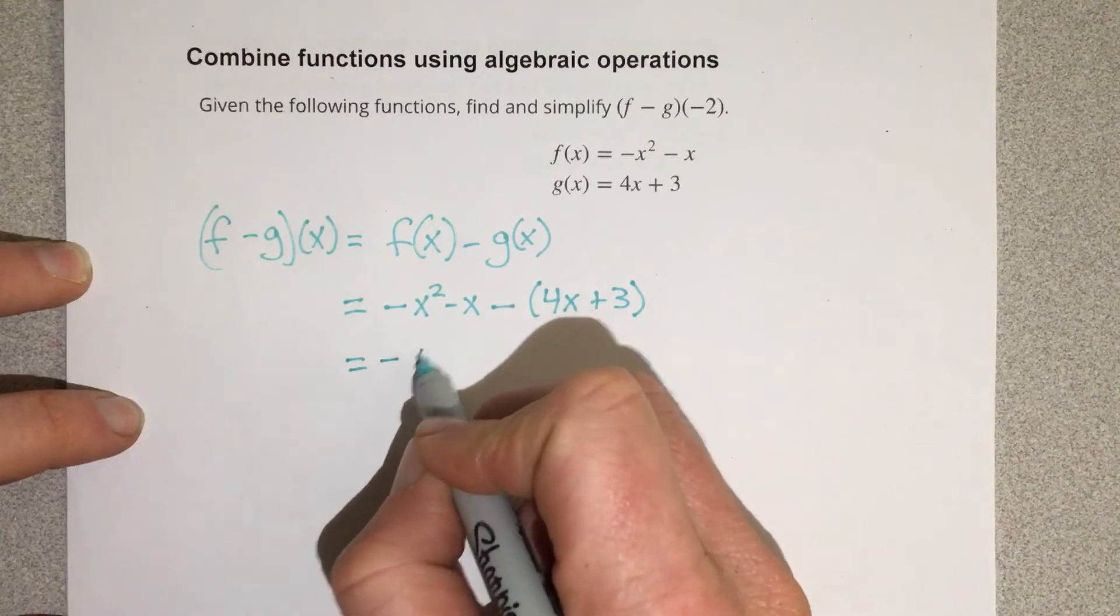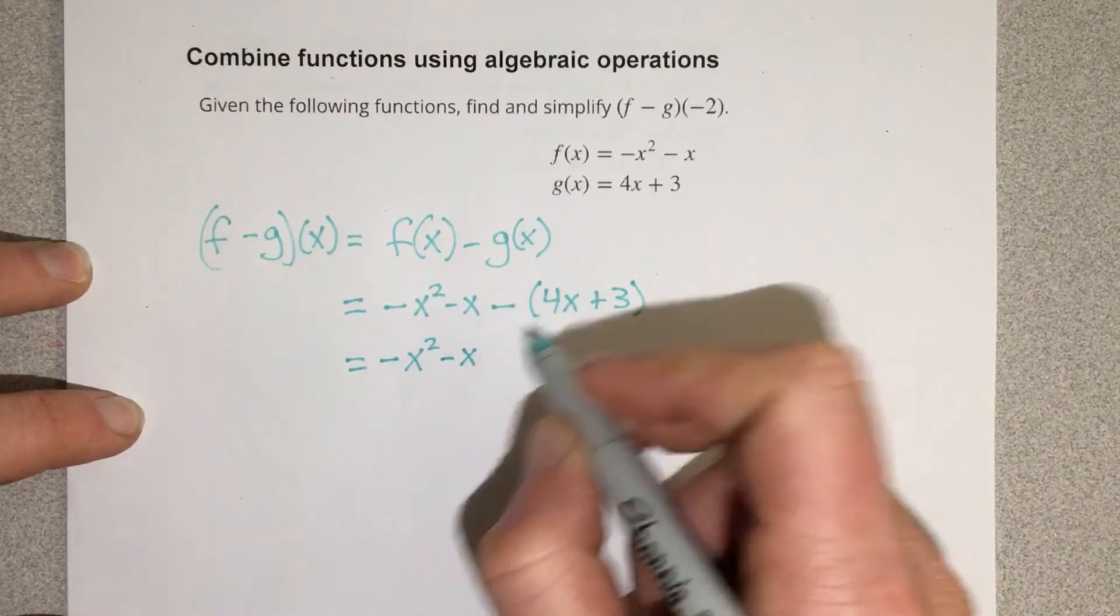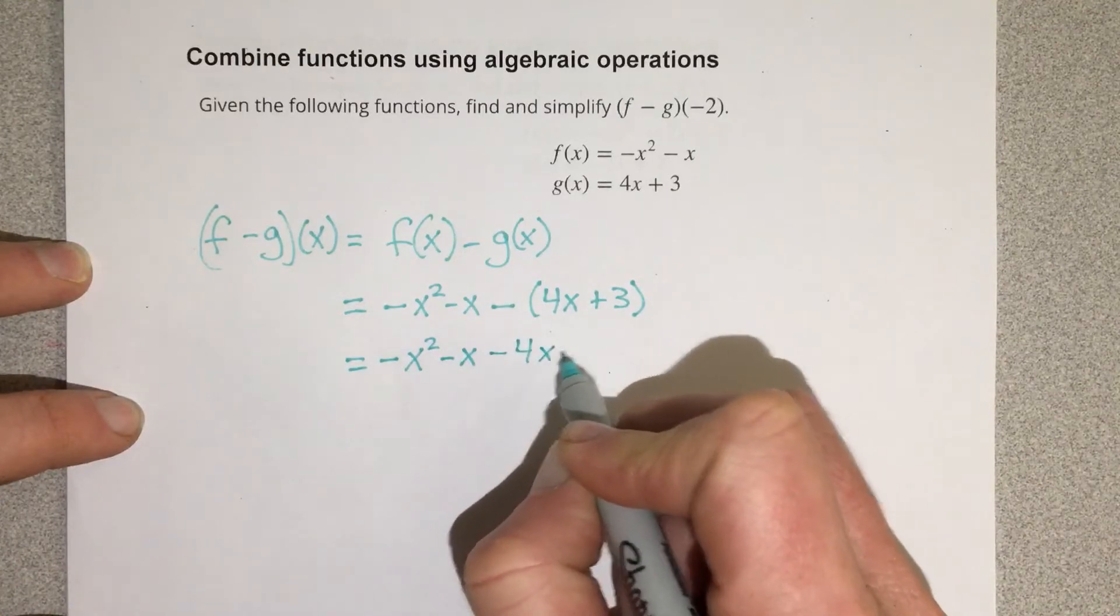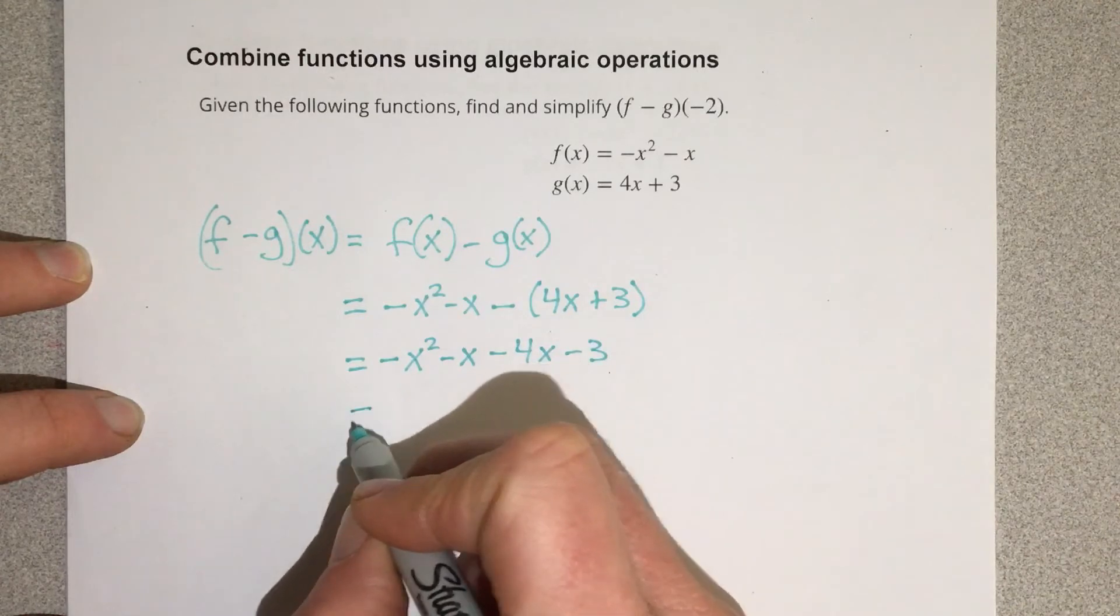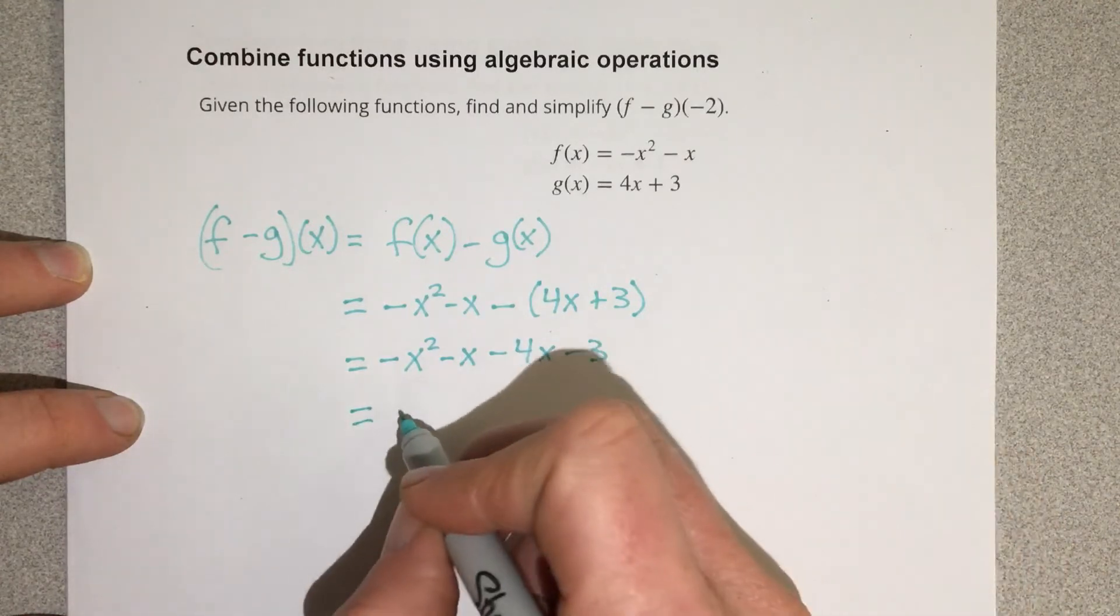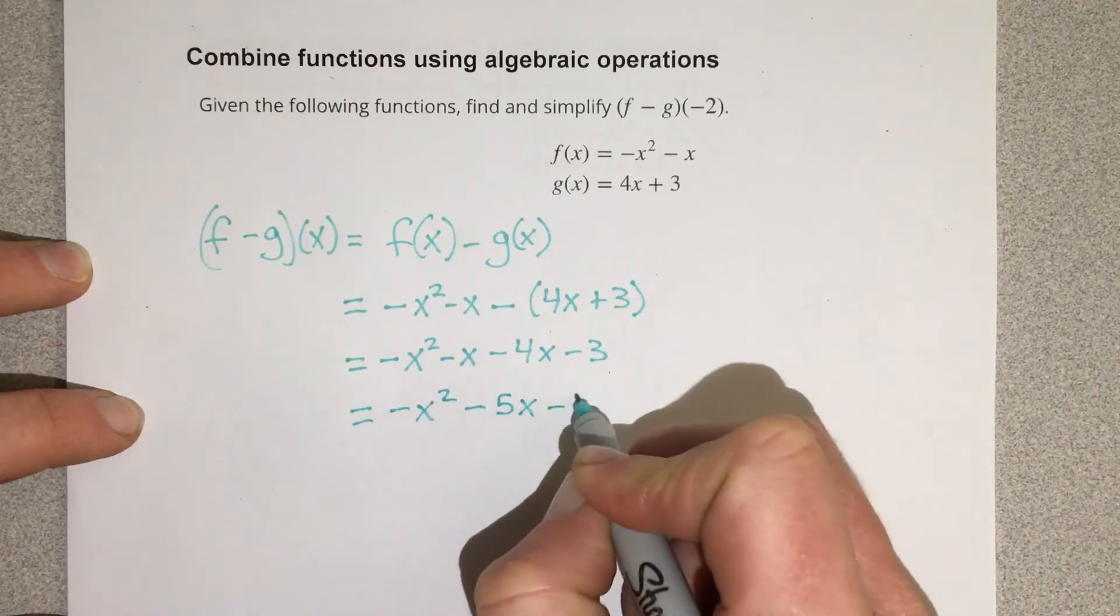So we end up with negative x squared minus x. We're going to distribute that negative to each term. That's negative 4x minus 3. So we get negative x squared minus 5x minus 3.